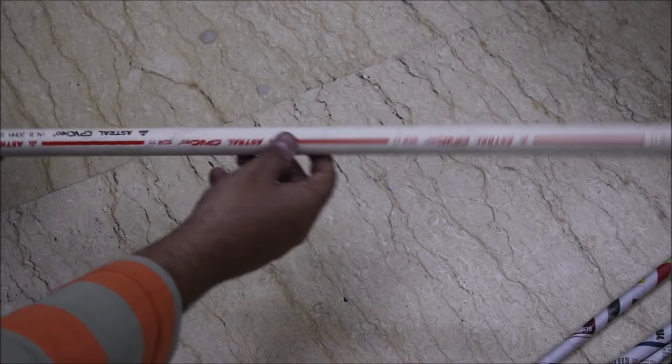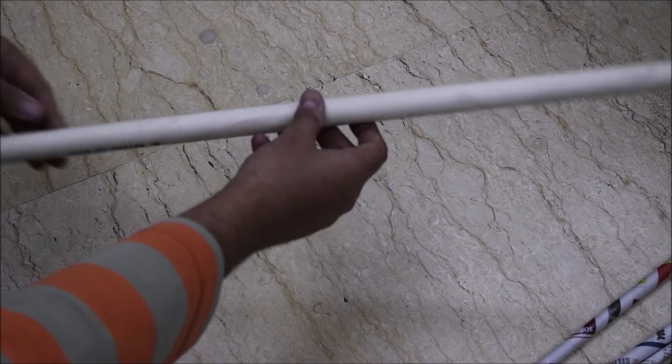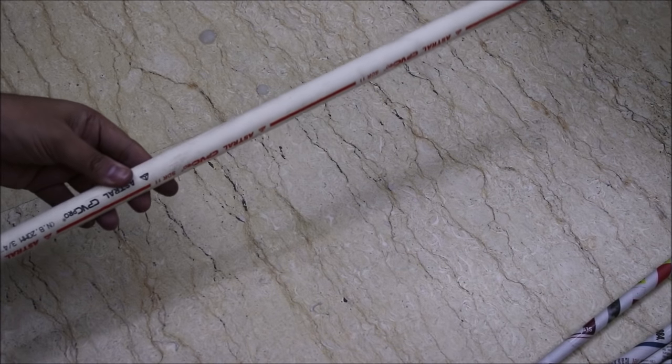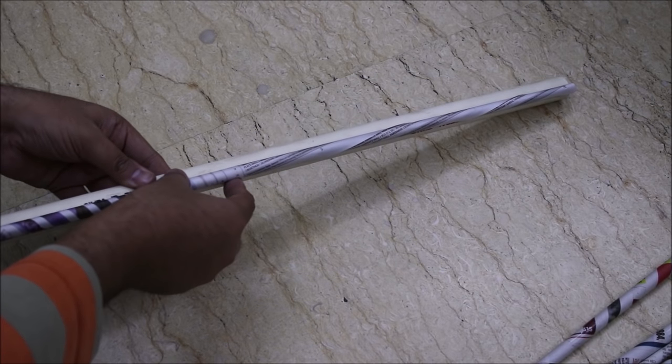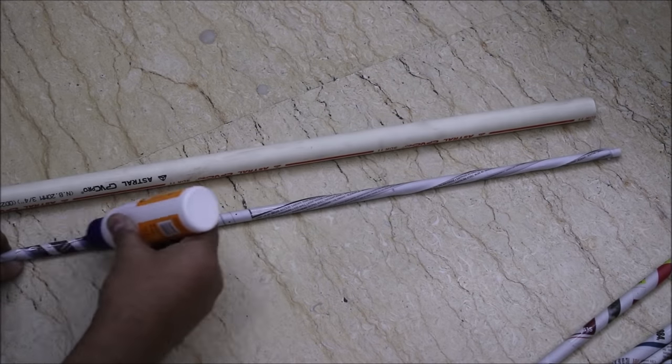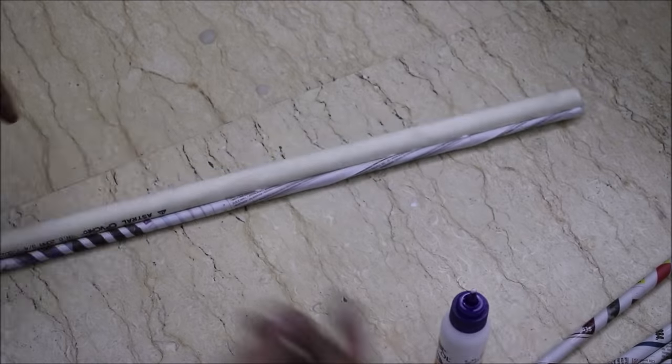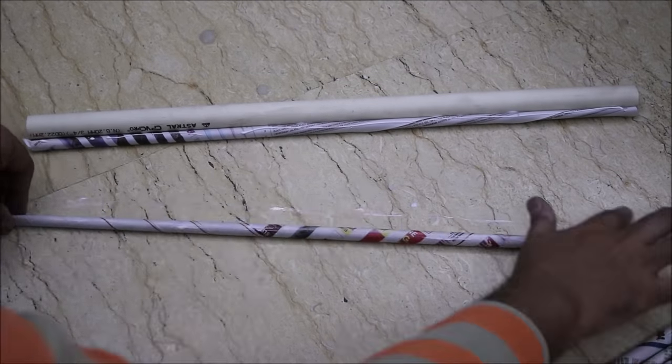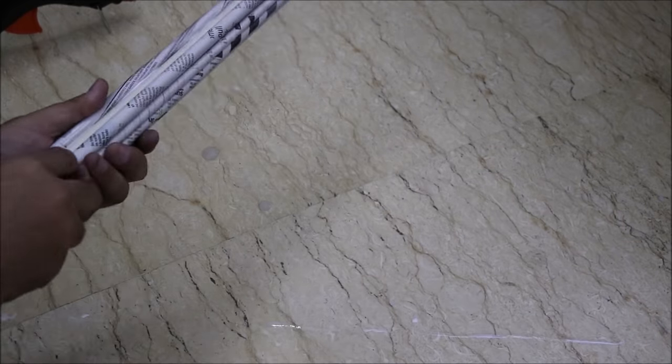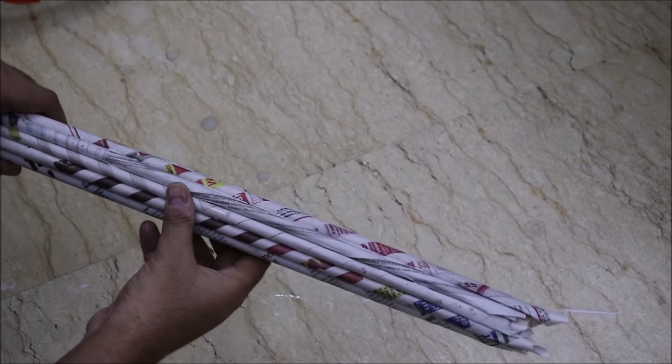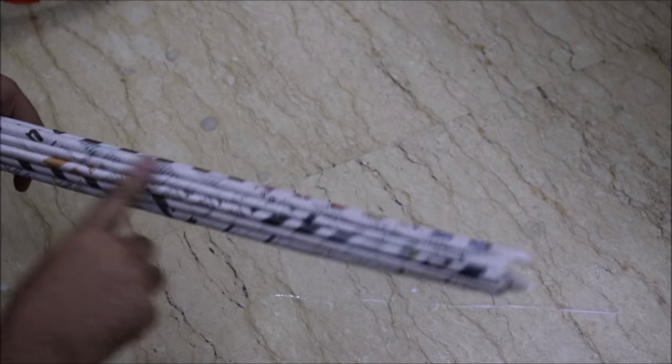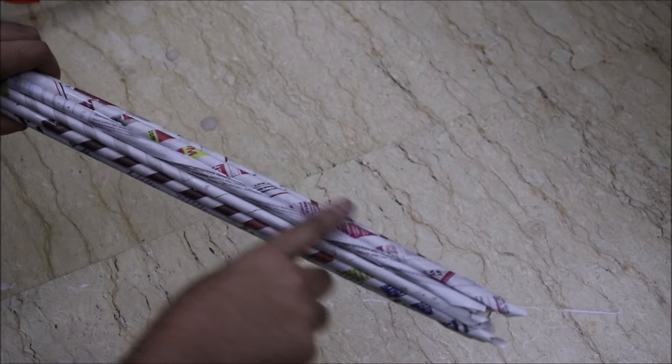Now we will take a PVC pipe and put all these newspaper sticks on it. And then we will place it up. In this way, we have put all these newspaper sticks on it.